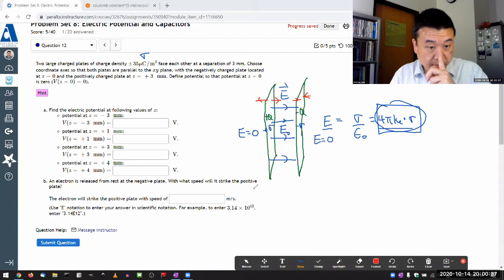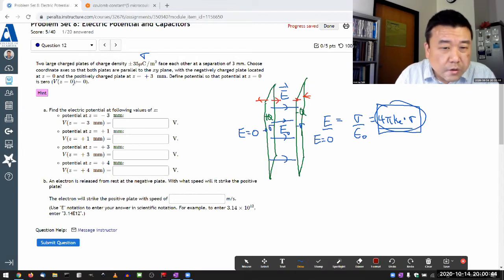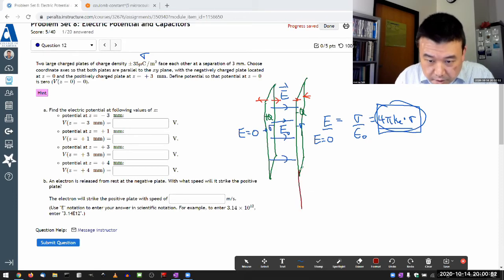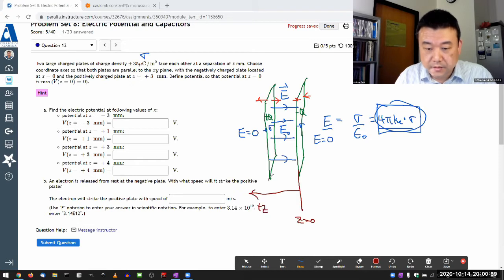So with that information, let me label some of the points that the question is giving. It's giving me, choose the coordinates so that negatively charged plate... Oh, all right. I'm going to have to... So this is going to be z equals zero. And you'll just have to flip your picture around so that this is positive z. This is going to be z equal to plus three millimeter.